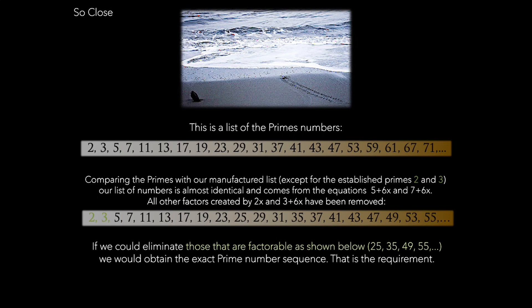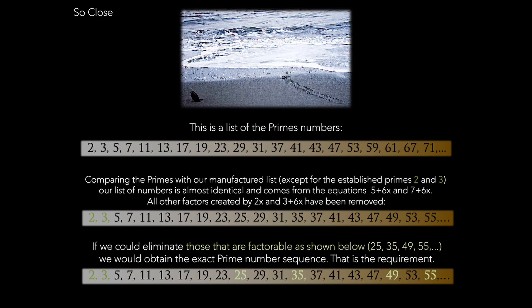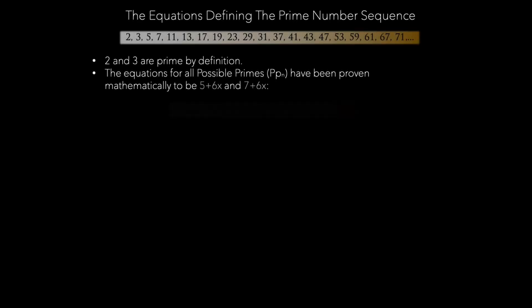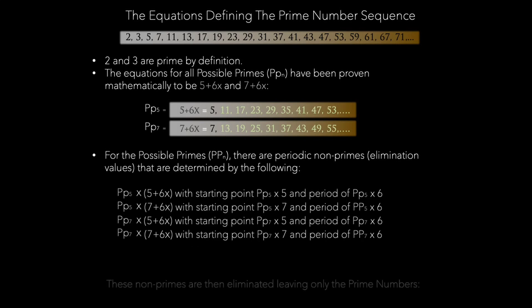This discovery transformed the prime number theorem from an asymptotic approximation to a very precise calculation. We can now determine the exact values, locations, and distribution of prime numbers. Visualize it like this. Each potential prime sends out two precise elimination signals based on the very equations that define them. As we move to higher numbers, these elimination signals become more dense, explaining why primes are more scarce in the higher ranges of values.